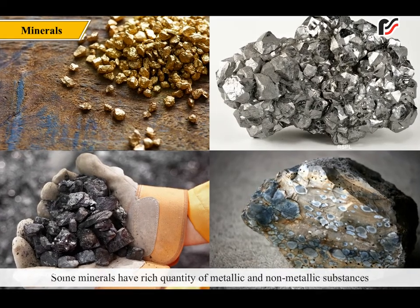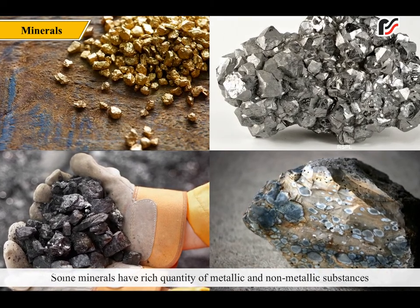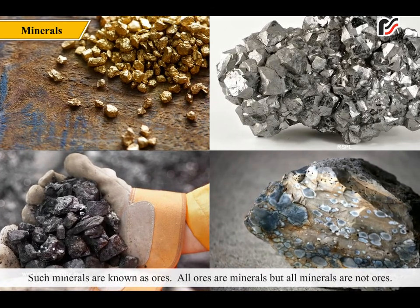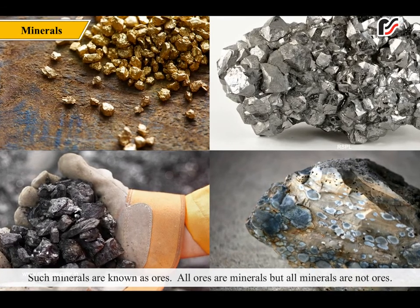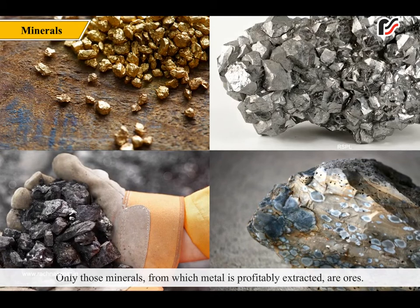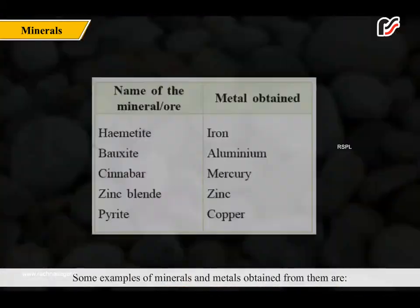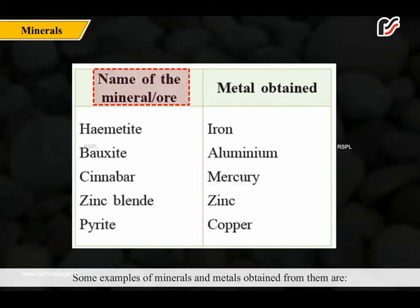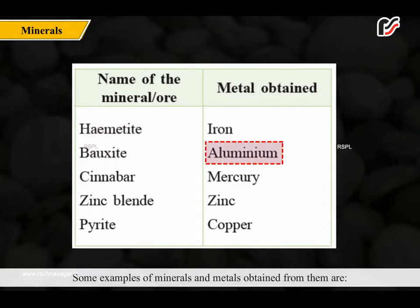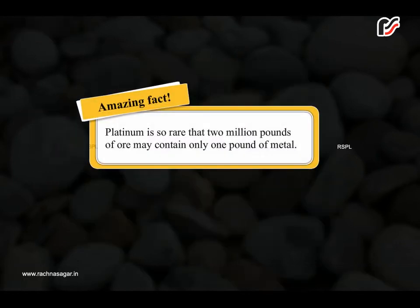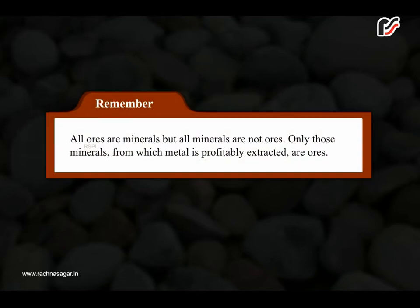All rocks are made up of minerals. Some minerals have rich quantities of metallic and non-metallic substances which can be extracted profitably. Such minerals are known as ores. All ores are minerals, but all minerals are not ores. Only those minerals from which metal is profitably extracted are ores. Some examples: Hematite yields Iron, Bauxite yields Aluminium, Cinnabar yields Mercury, Zinc blende yields Zinc, and Pyrite yields Copper. Platinum is so rare that 2 million pounds of ore may contain only 1 pound of metal.